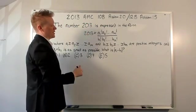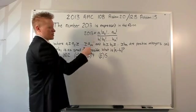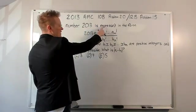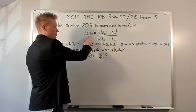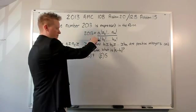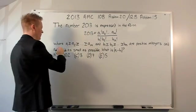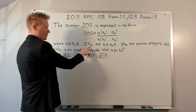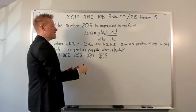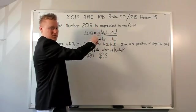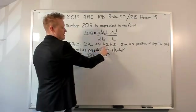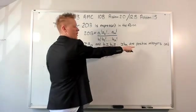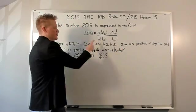2013 AMC 10b problem number 20, which was also the 12b problem 15. The number 2013 is expressed in the form — don't even read all of it, it's just factorials and things. Where a1 is greater than or equal to a2, all the way down to am. So these are in descending order, or at least they don't increase — they could be equal. Same goes for the b values in the denominator, and these values are positive integers, so there are no decimals.